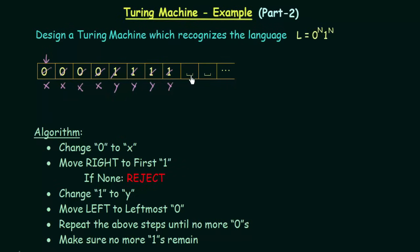The next symbol is a blank symbol, so this string will be accepted. If at any point you find a zero but when you go searching for the one you don't find one, then you reject — that means the number of zeros is not equal to the number of ones. In that way you can verify whether the number of zeros and number of ones are the same. This is the algorithm we need to follow.